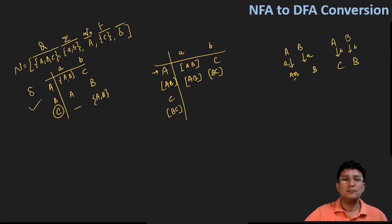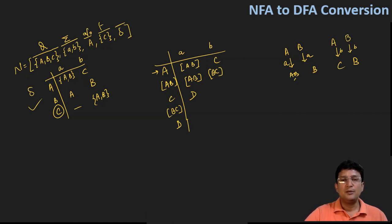BC is a new state. Now C on getting symbol small a is undefined in the NFA transition table, so we create a new dead state. And C on getting input alphabet small b leads to AB, so we write AB here.